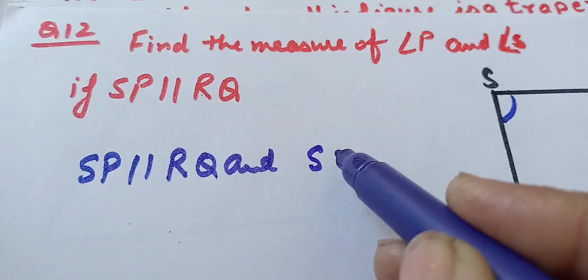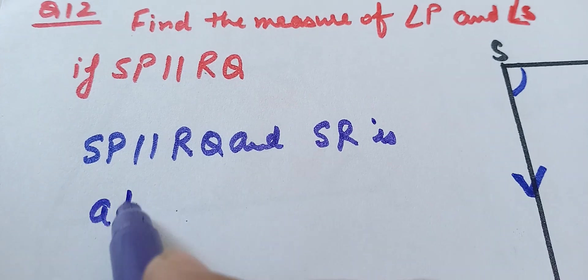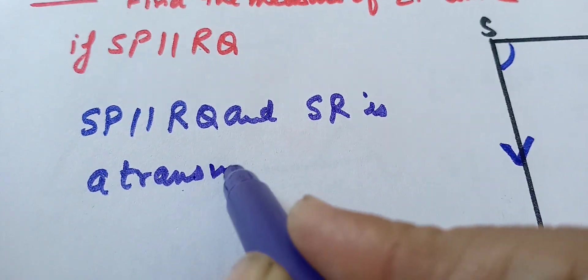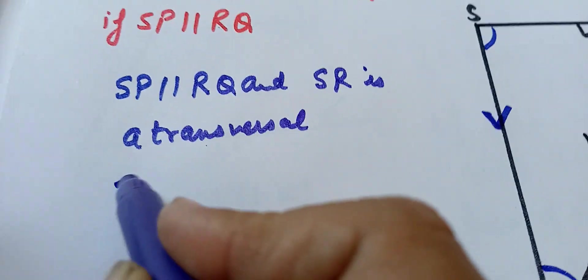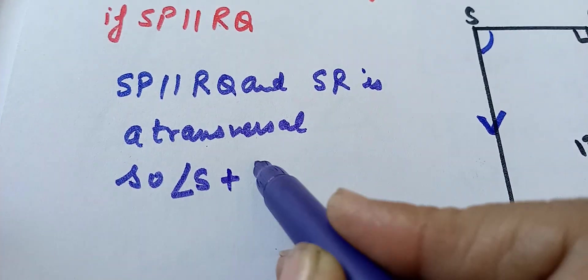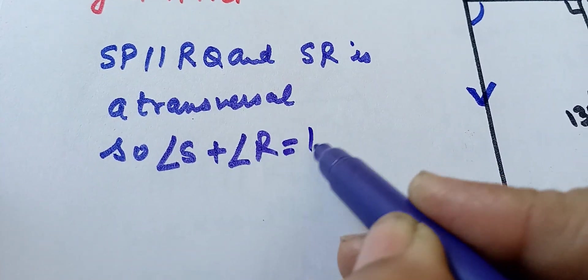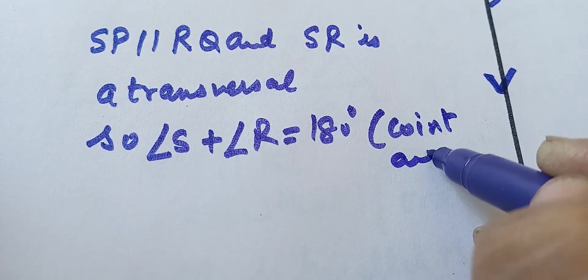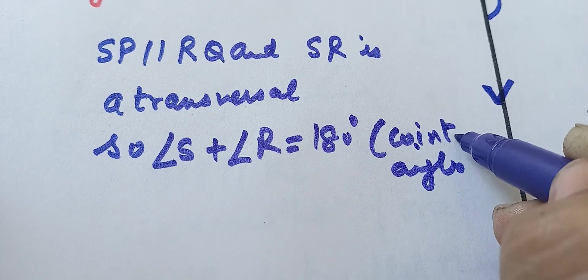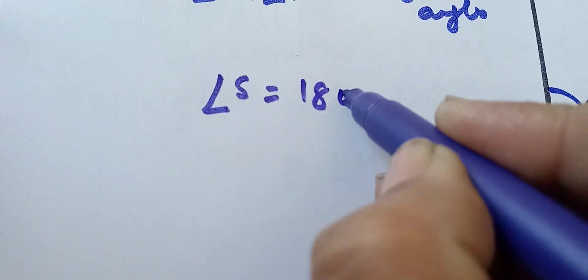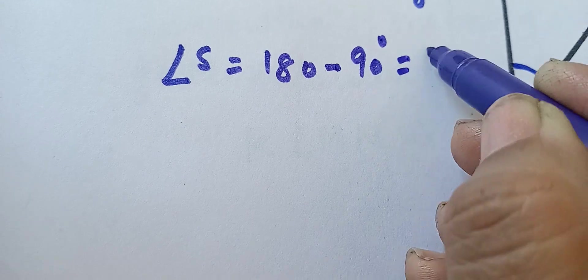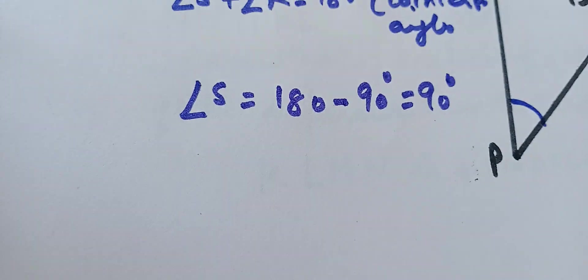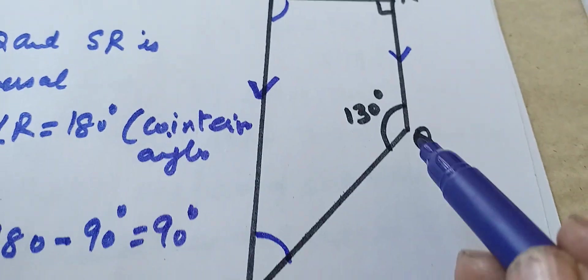SR is a transversal. So angle S plus angle R equals 180 degrees — these are co-interior angles. Now angle S will be equals to 180 minus 90, which means angle S is 90 degrees.